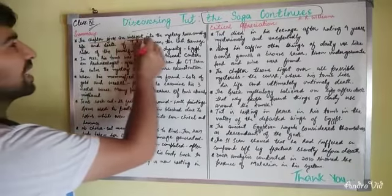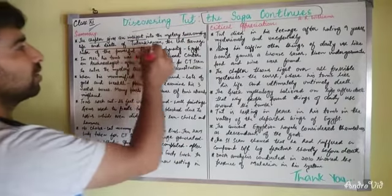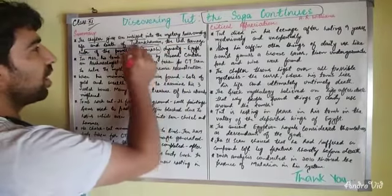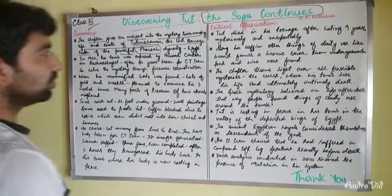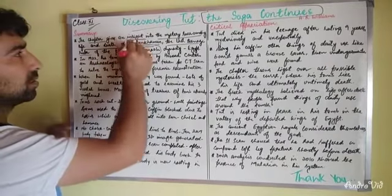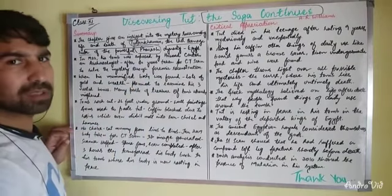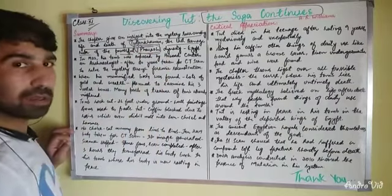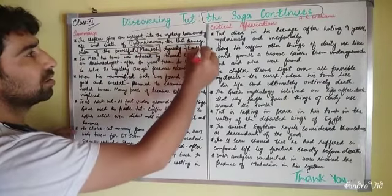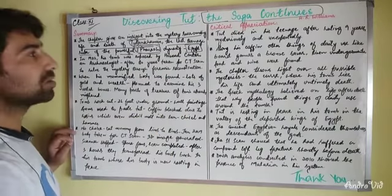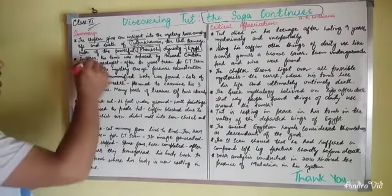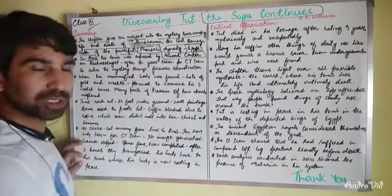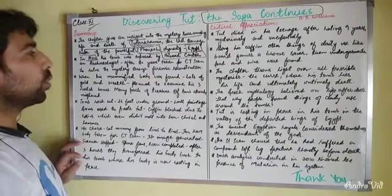The chapter gives an insight into the mystery surrounding the life and death of Tutankhamun — the last teenage ruler of the powerful Pharaoh dynasty of Egypt. Tut, as he is called, was the last teenage ruler of the Pharaoh dynasty, which ruled Egypt for a long period of time and was considered the strongest and most powerful dynasty. In 1922, Howard Carter, a British archaeologist, exposed the tomb of Tut.